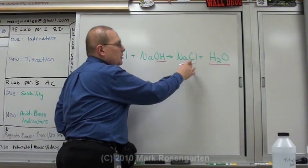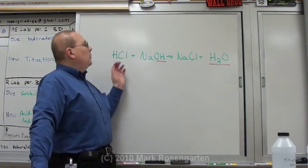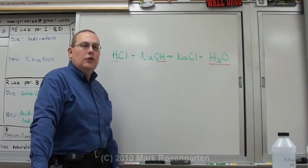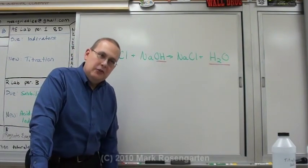Meanwhile, the other ions combine to form a substance known as a salt. If the number of moles of hydrogen ions and the number of moles of hydroxide ions are equal, the solution is going to neutralize itself to a nice neutral pH of 7.